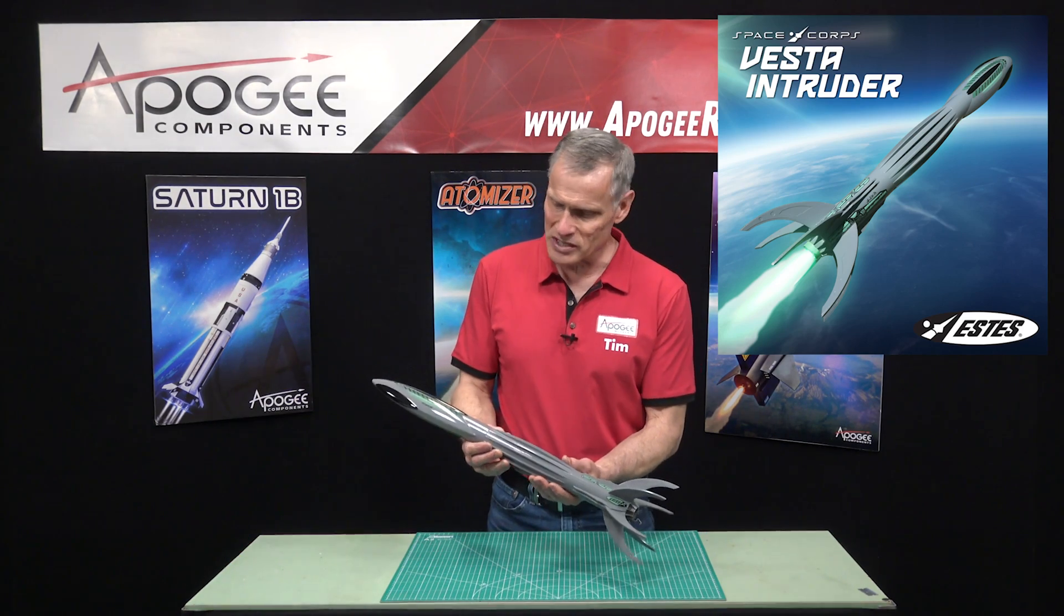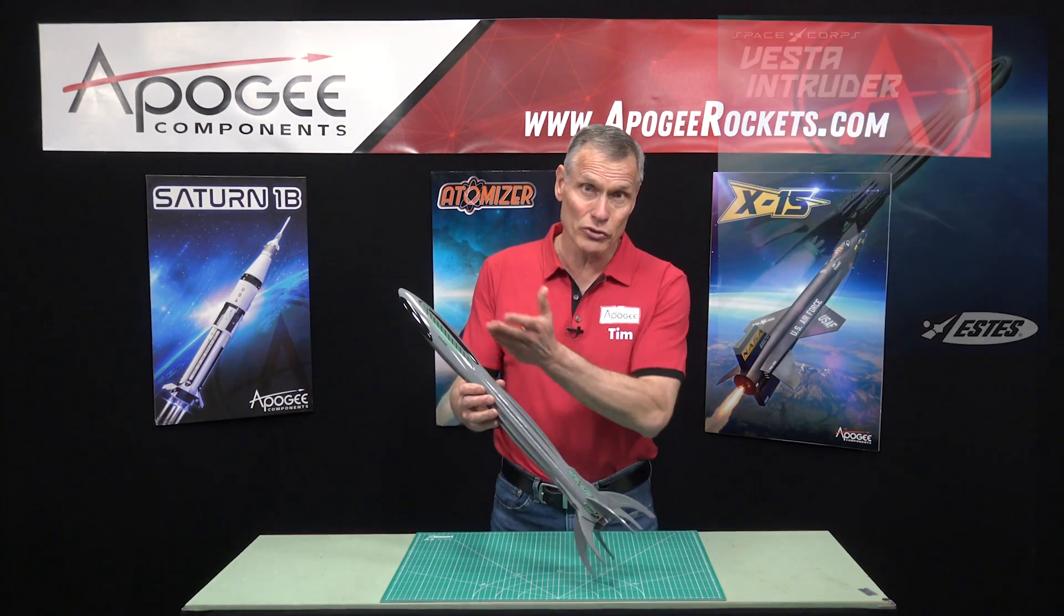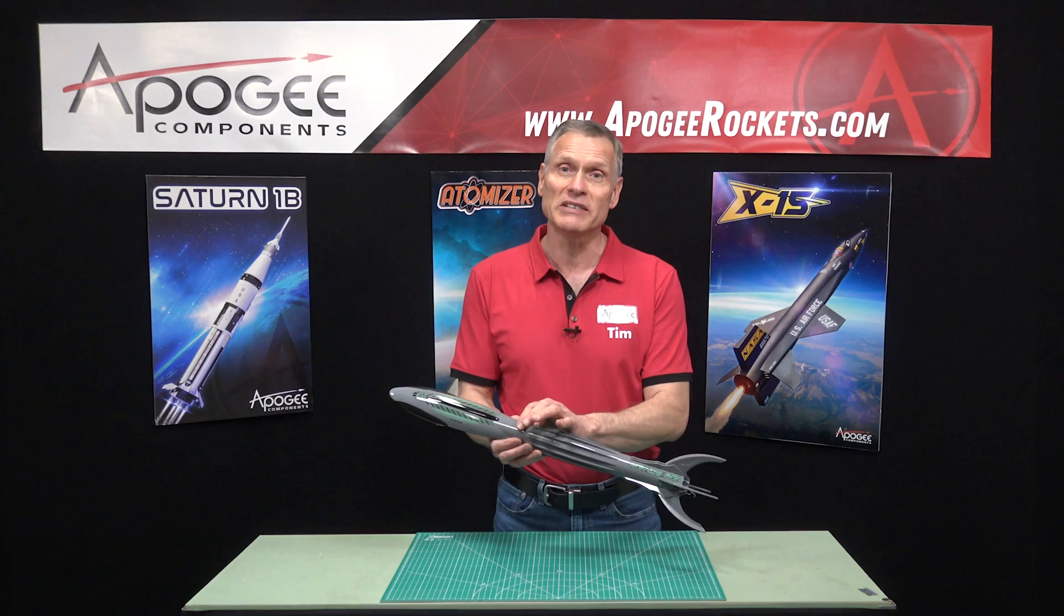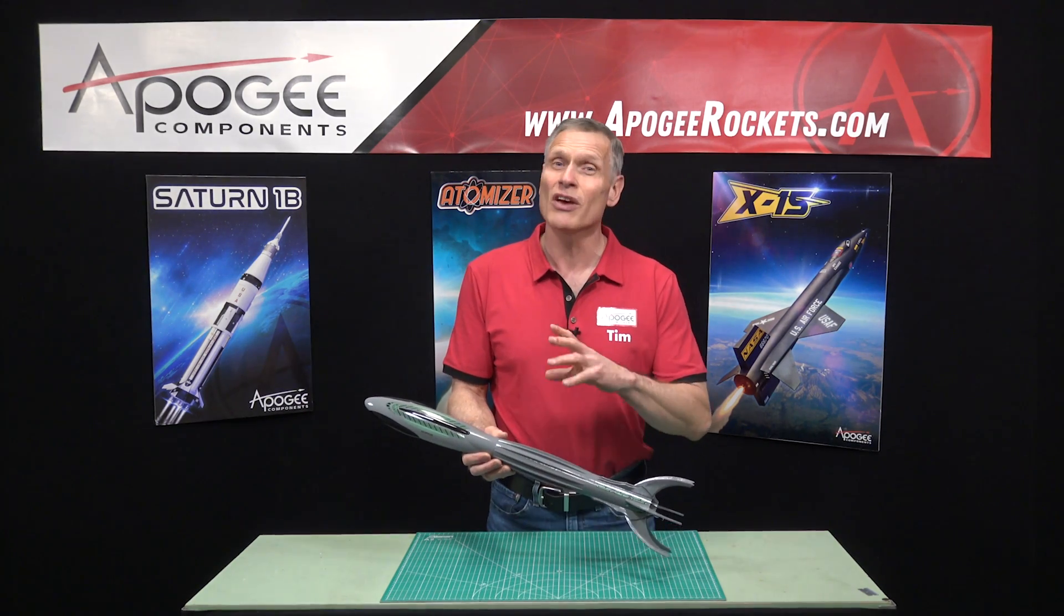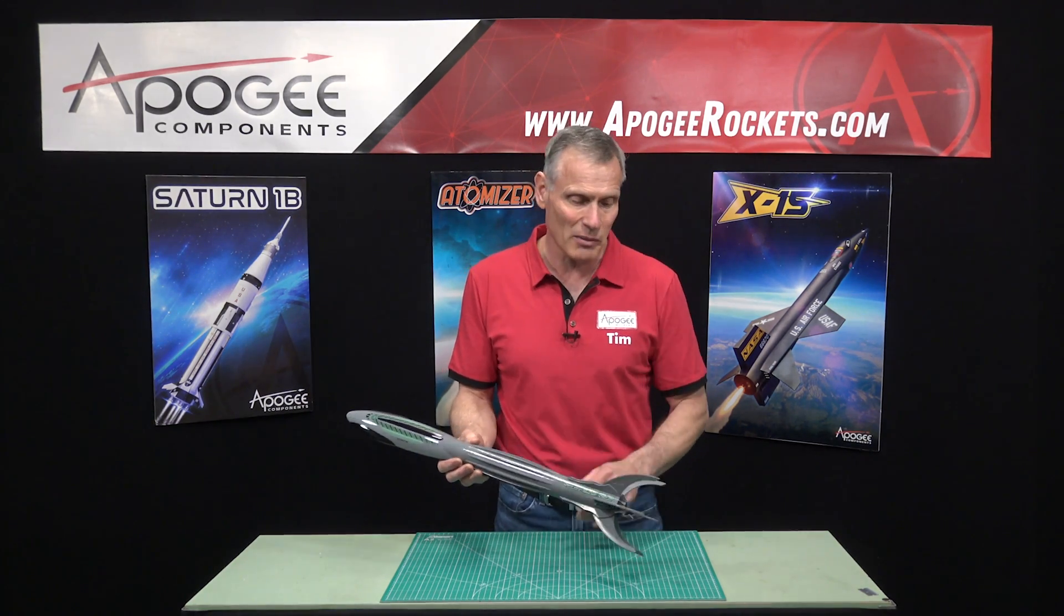This is an introduction to this rocket kit from Estes called the Vesta Intruder. As you can see, it's a nice size rocket. It's over two feet long.